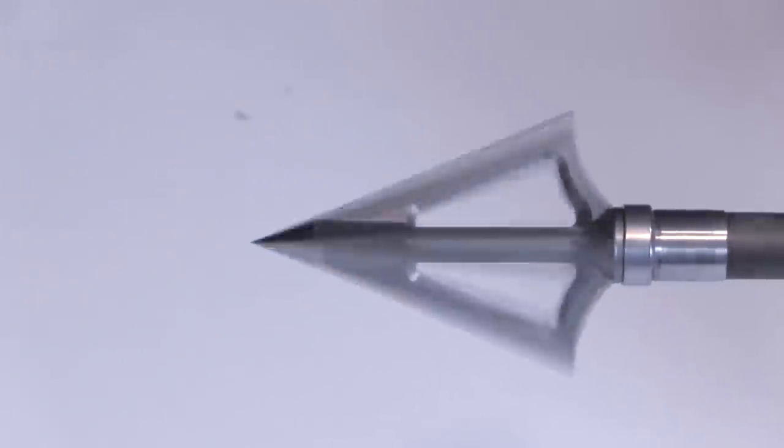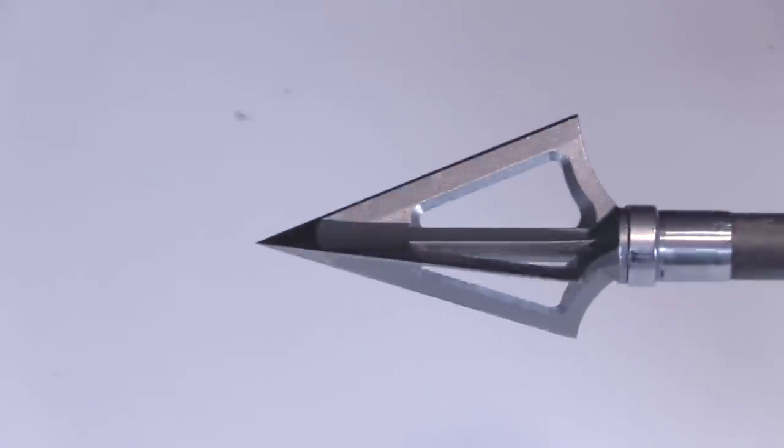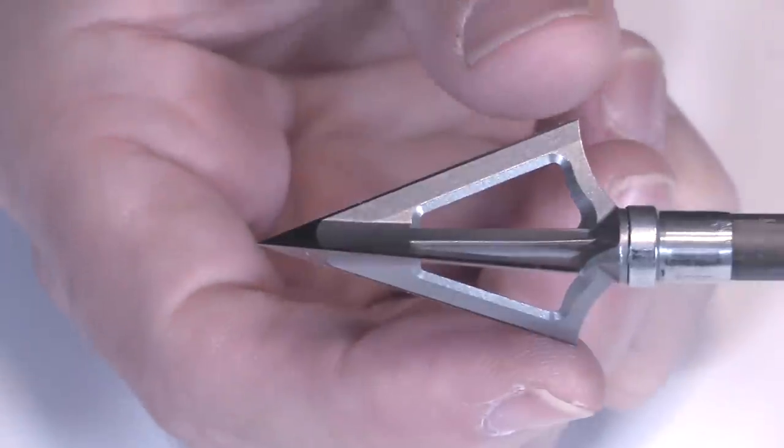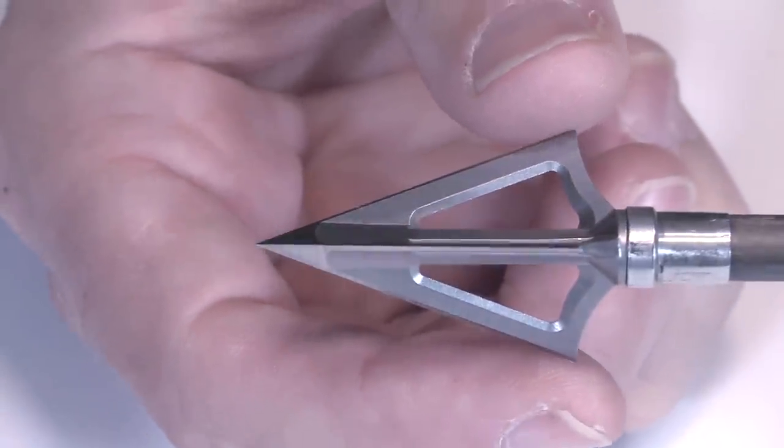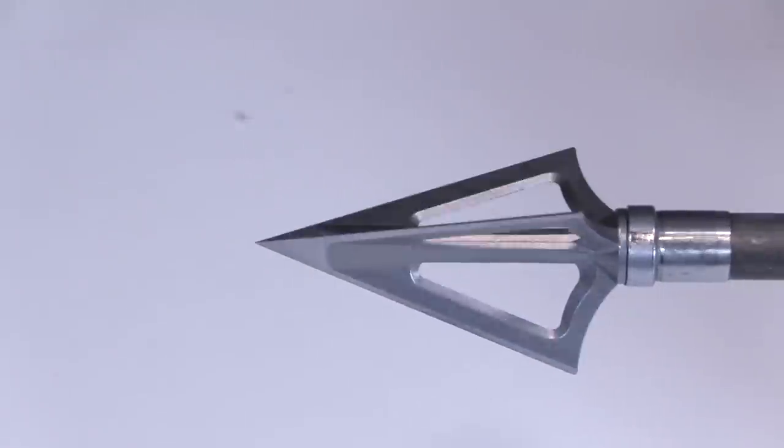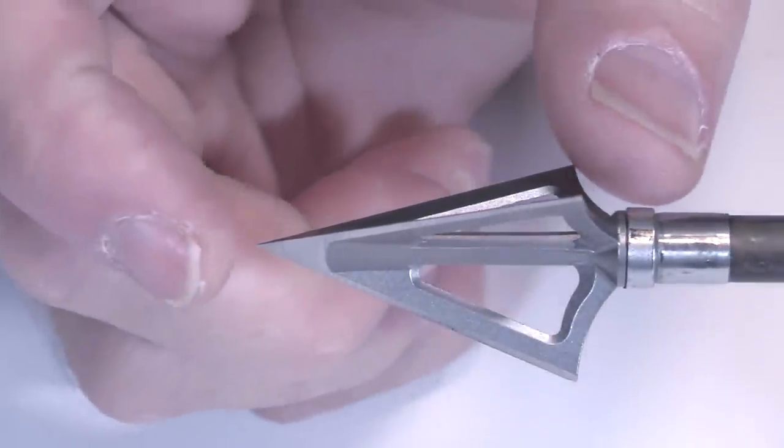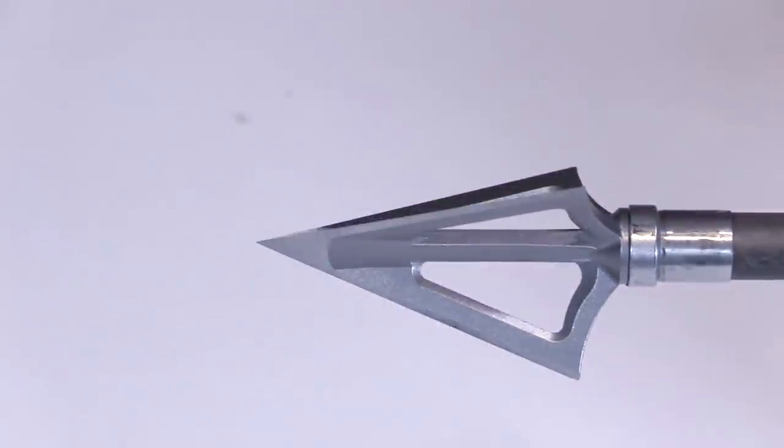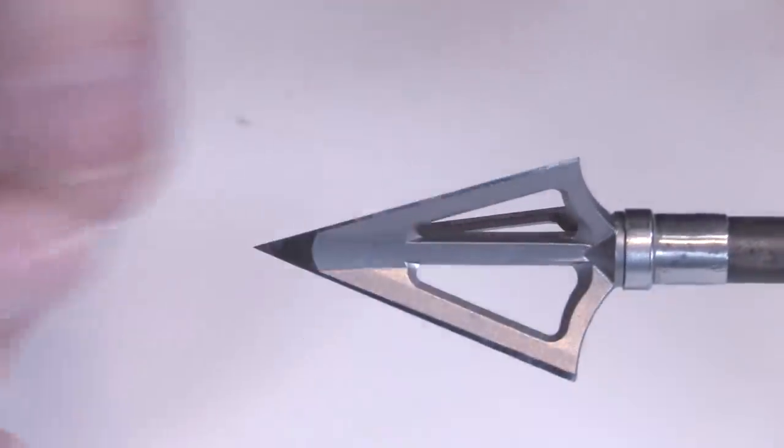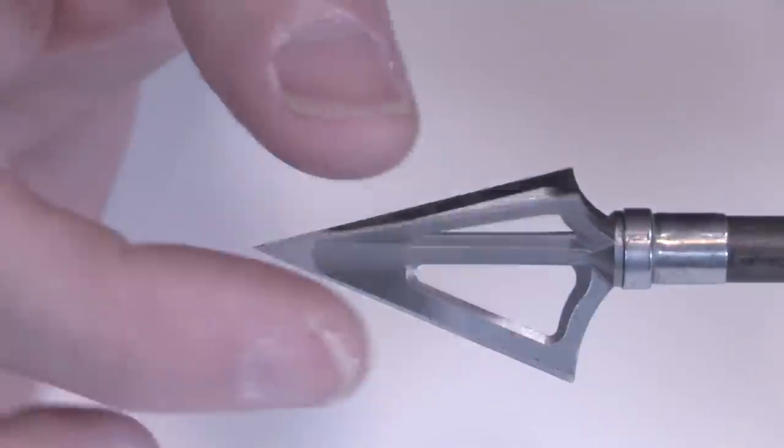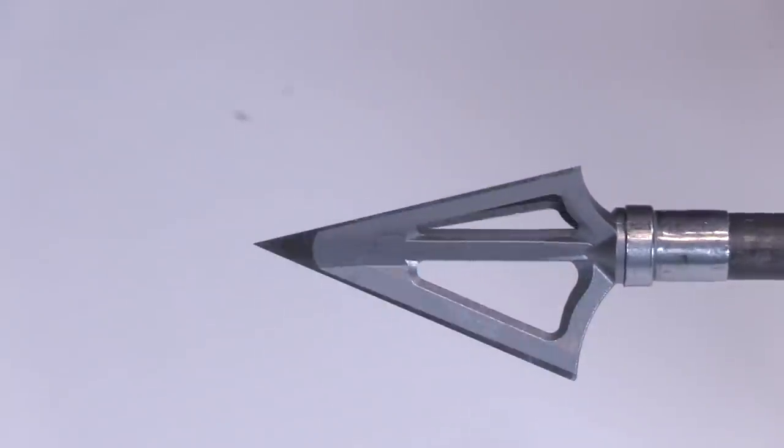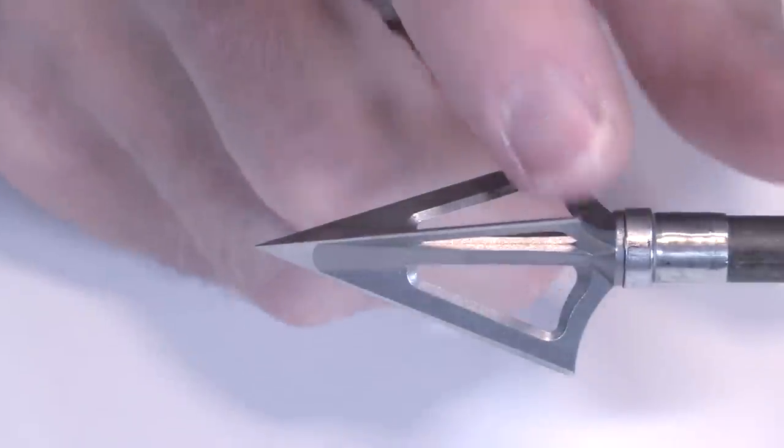First we'll take a look at the Montec, and this is solid stainless steel, it's metal injection molded, this is a 125 grain model. Their cutting diameter is 1 1/8 inch, with three blades giving it a total cut of 1.69 inches. The total length of the broadhead extending beyond the arrow is 1.59 inches long. And the blades at their thinnest point, not counting the bevel and the edge, just the main part of the blade is 0.042 inches thick, it gets a little thicker at the base.